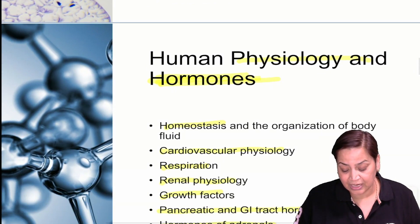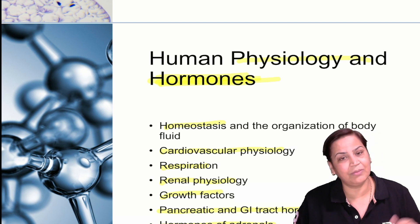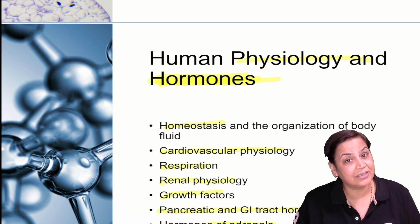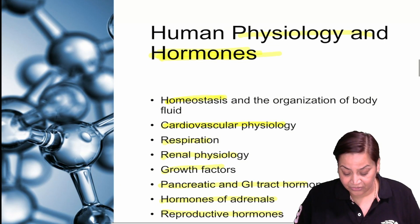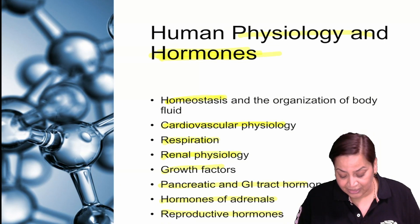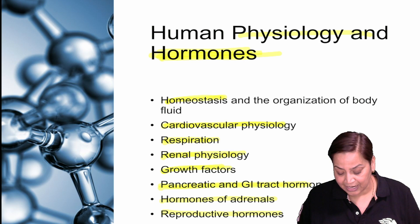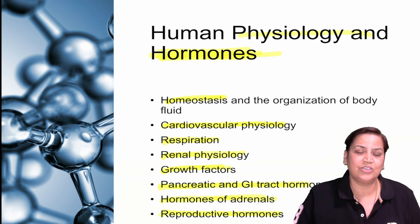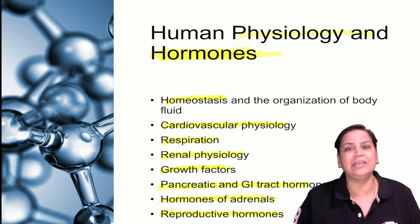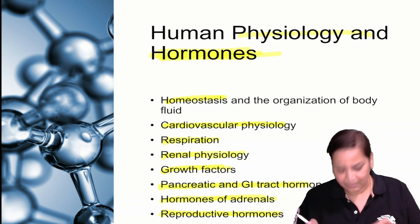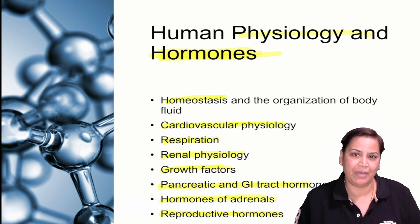Then human physiology and hormones. Hormones are the first messengers, which all of you are familiar with. Topics include homeostasis, cardiovascular physiology, respiration, renal physiology, growth factors and pancreatic hormones - everything you have studied in graduation. Once you clear this exam, you will study the upgraded version of this. That is the difference, but you have to prepare all of this.